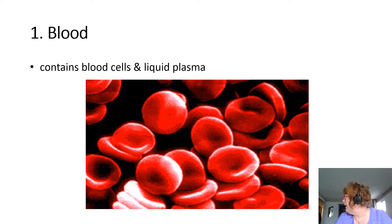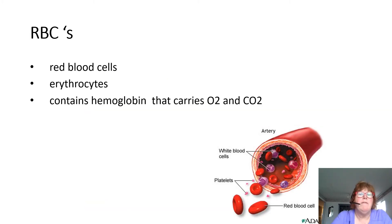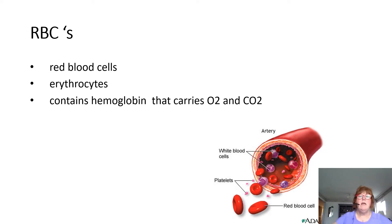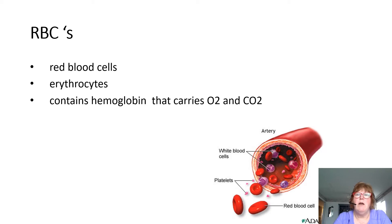The first thing is the blood, and blood consists of blood cells and liquid plasma — really like a river that's going through and bringing things to the body. The red blood cells, also called erythrocytes, contain the hemoglobin that carries the oxygen and the carbon dioxide. In anemics, they do not have enough hemoglobin to carry oxygen and carbon dioxide, so a side effect of anemia would be that they are very tired.